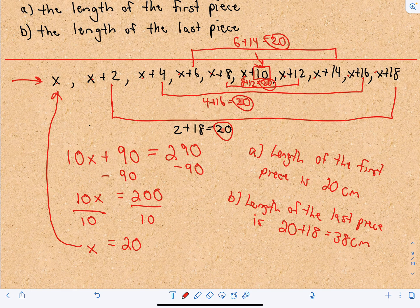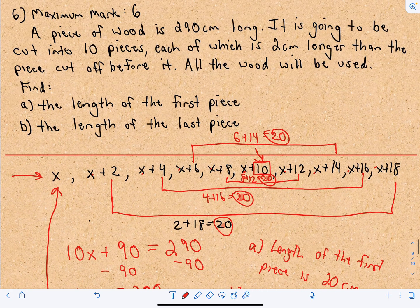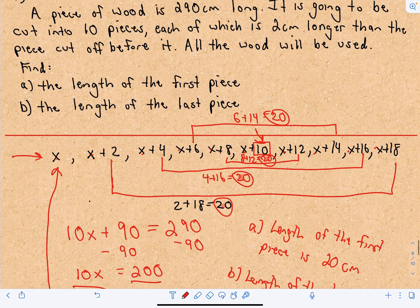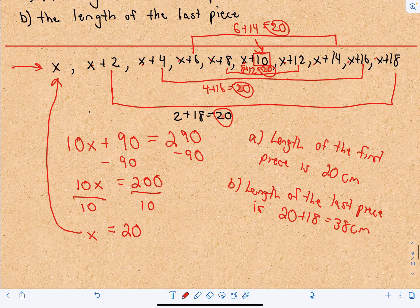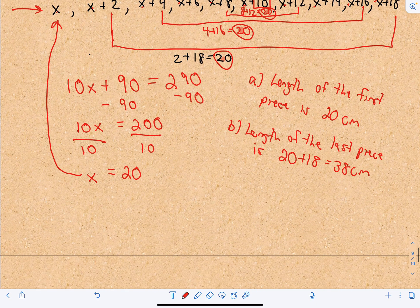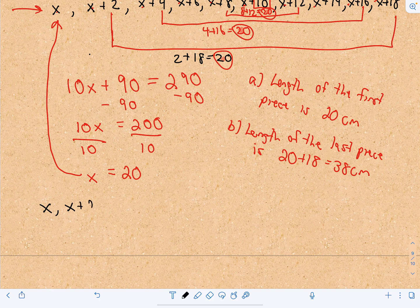The thing I want to talk about now is: for something like this, this one wasn't too bad because you're only cutting it into 10 pieces. But what if they cut it into 100 pieces, or 1,000 pieces? What would you do? So I'm going to show you some formulas on summation notation. This part is a little bit longer, so if you're happy with the answer, feel free to go on to the next one.